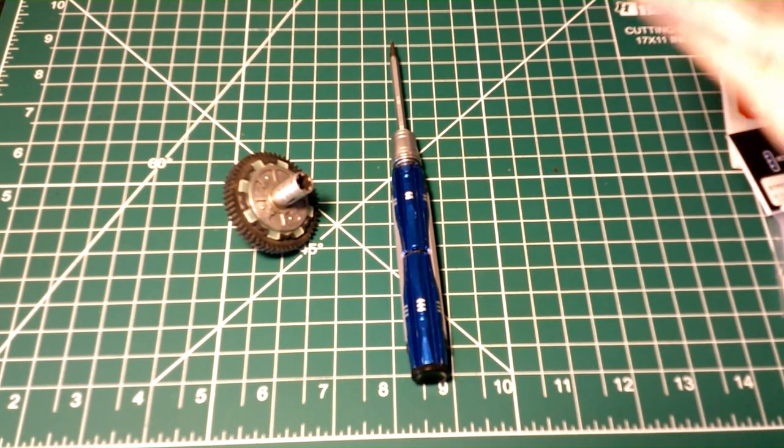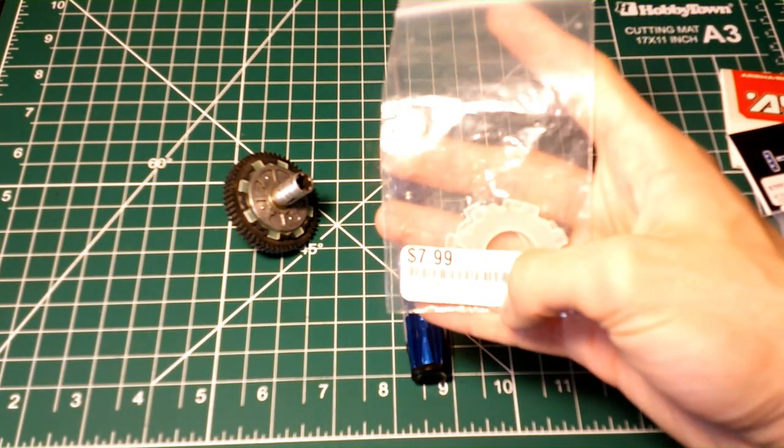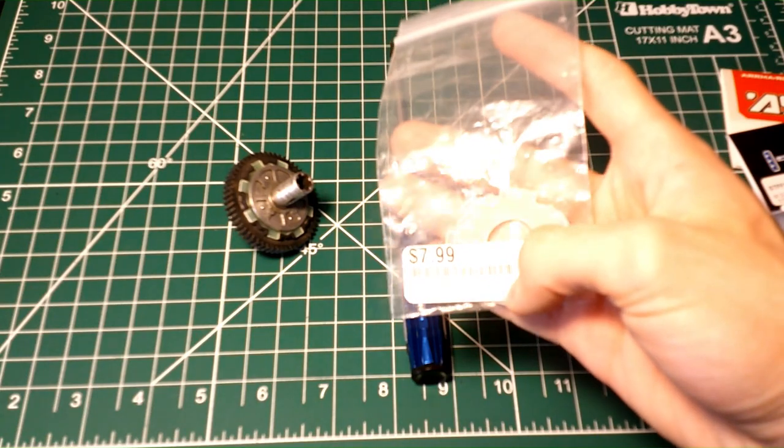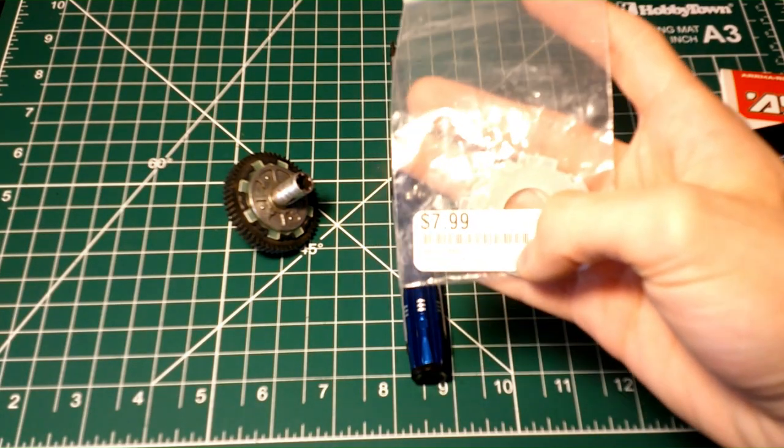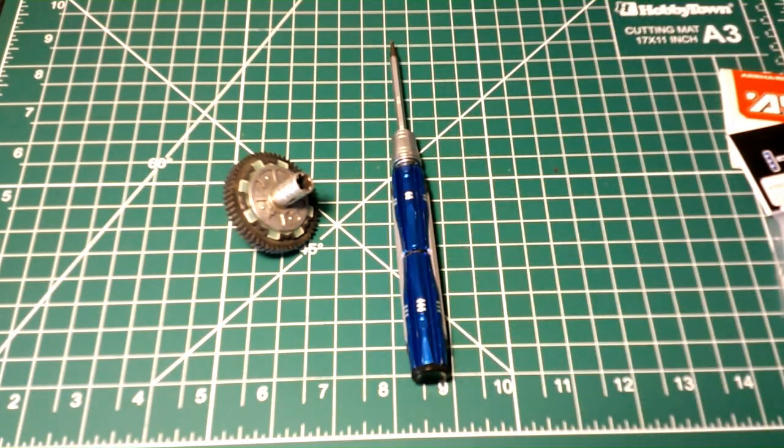Then the last thing is if they need replacing, and I'll show you how to tell, get some clutch pads, and the part number for that one is ARA310908. Alright, without any further ado, let's get into rebuilding this thing.